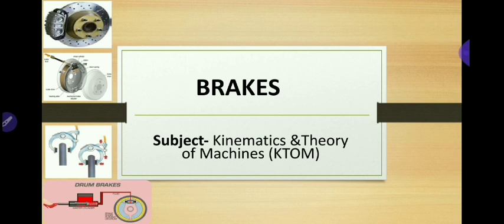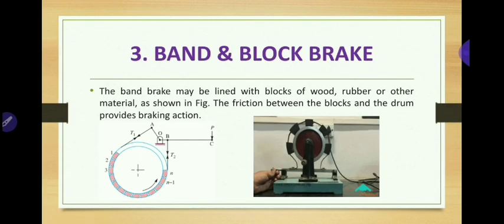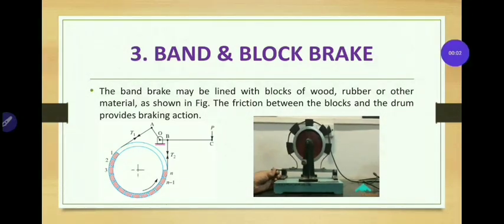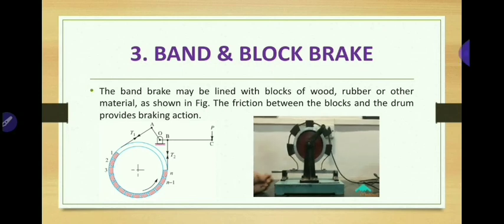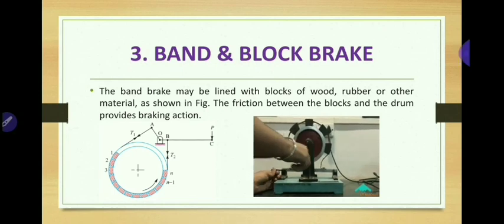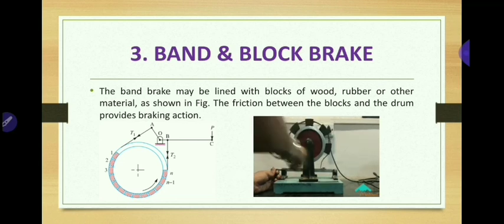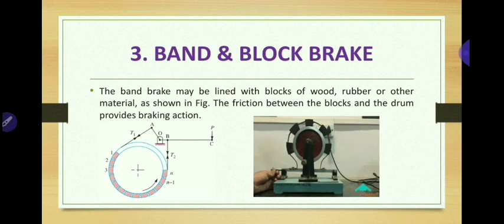After these two types of mechanical brakes, the third type we are going to see in today's lecture is the band and block brake. Band and block brake is a combination of band brake and block brake. In a band and block brake, n number of blocks of wood, rubber, or any other material are lined up along the band, and the friction between the blocks and drum provides a braking action.